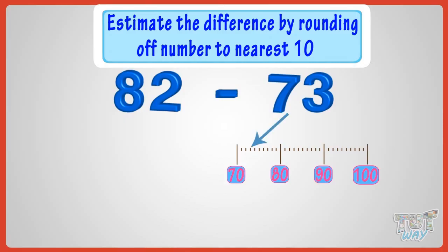Rounding off 73 to nearest 10, we will get 70, as 73 is below the 5 mark. Rounding off 82 to nearest 10, we will get 80, as 82 is below the 5 mark.